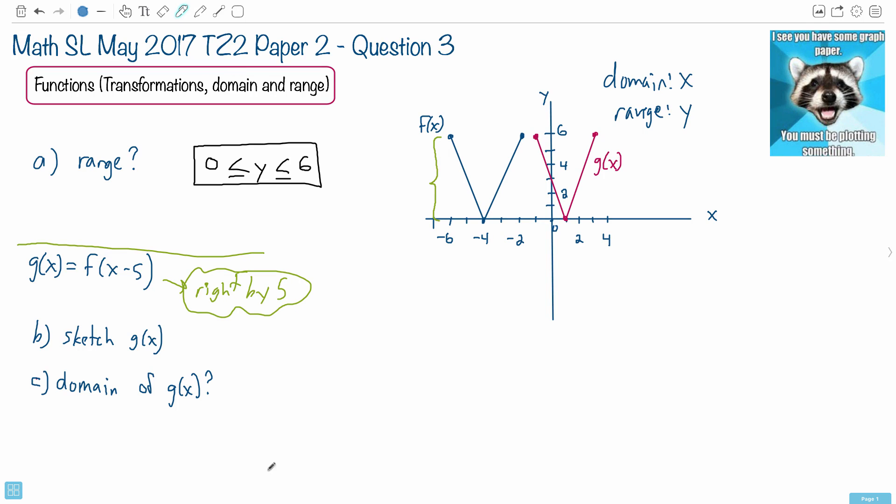In this final section, we're supposed to find the domain of g of x. If we look at g of x, which we just drew in part b, then we just have to find this domain. And remember what domain is. The domain is the set of all possible x values.